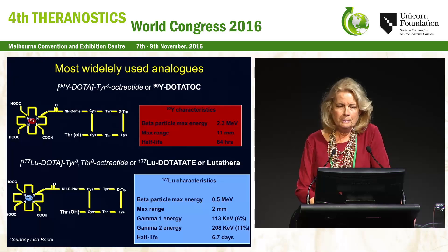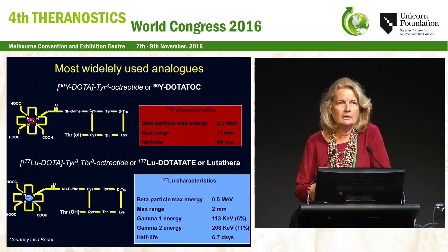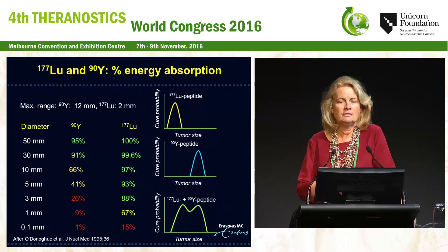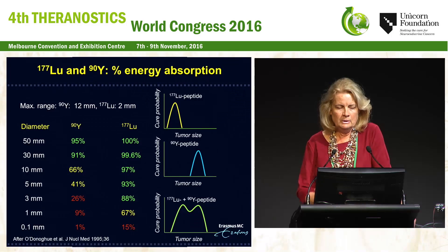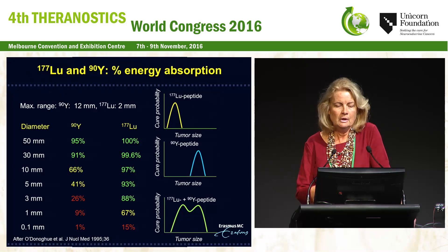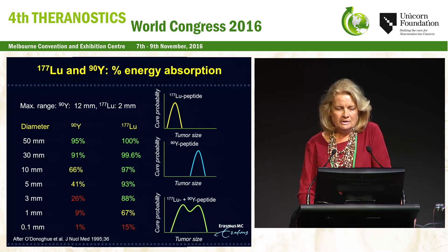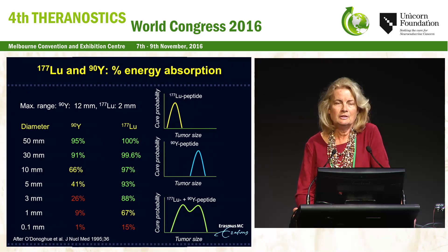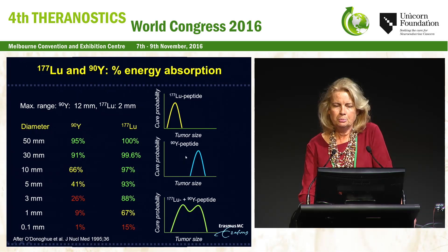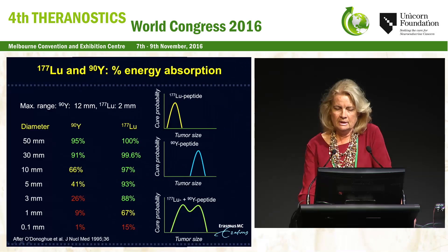Both yttrium-90 and lutetium-177 are beta particle emitters, with a difference: the beta particles emitted by yttrium-90 have higher energy — 2.3 MeV versus 0.5 MeV — and a longer range in tissue, 11 mm versus 2 mm at the max. These differences lead to different percentages of energy absorption in tumors of different sizes. For tumors smaller than 3 mm, yttrium-90 absorbs only 26% of energy in the lesion, whereas lutetium absorbs 88%. This is in line with O'Donoghue 1995, which stated lutetium peptides have a high cure probability in small tumors, yttrium-90 in larger lesions, and that the combination would cover a wider range of tumor sizes.